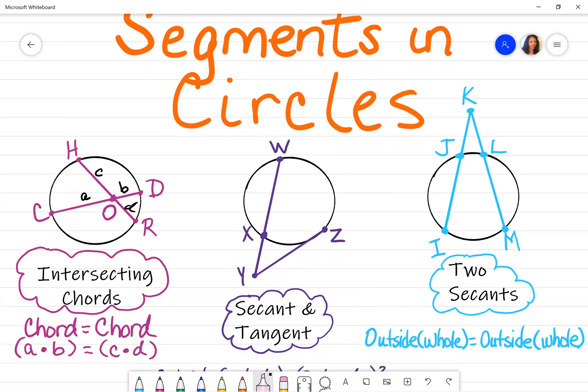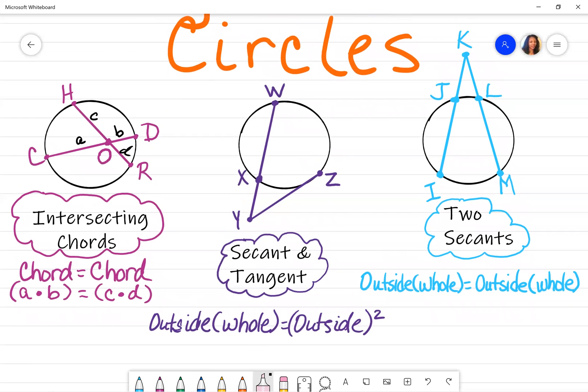The next one is when you have a secant and a tangent. The secant is the one that goes through the circle and the secant is always represented by the formula outside times whole. What does that mean? That means the actual secant or segment that I'm looking at, which is a secant, what part of it is outside of the circle? So this is the outside. That's what this part of the formula represents, the outside.